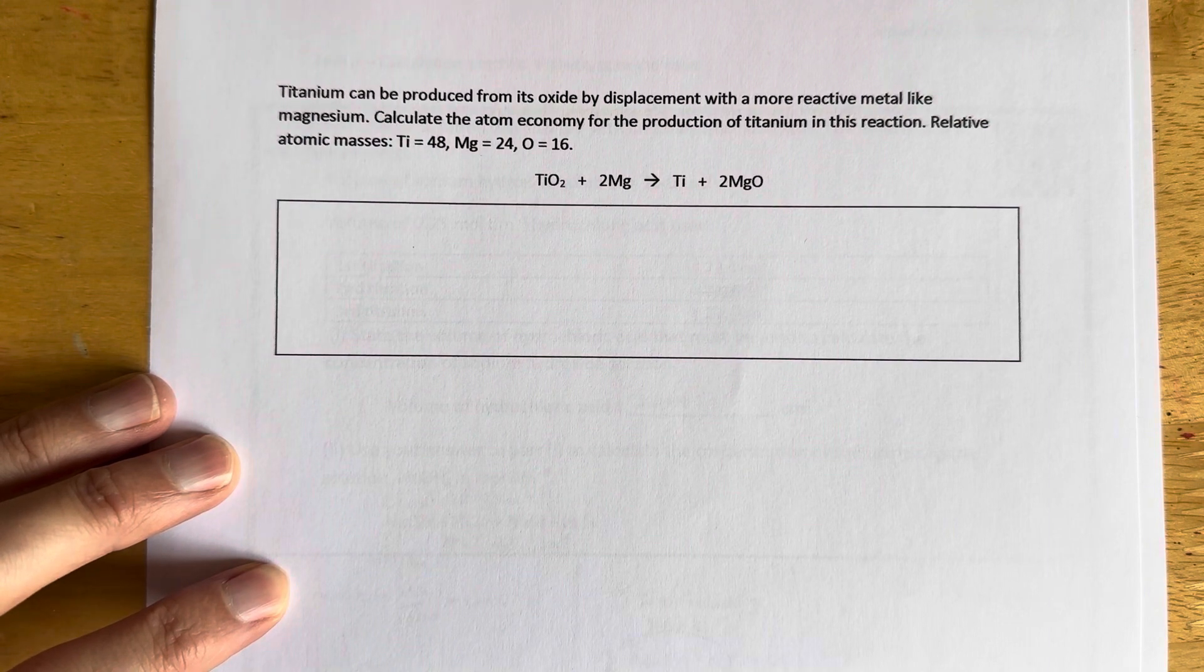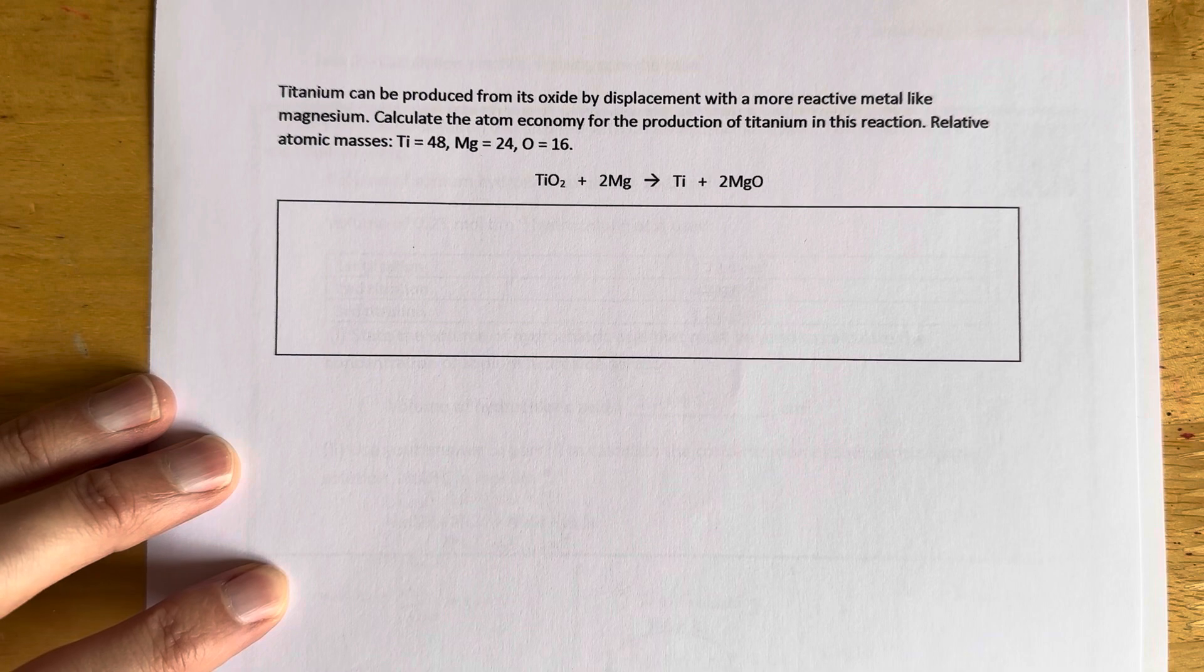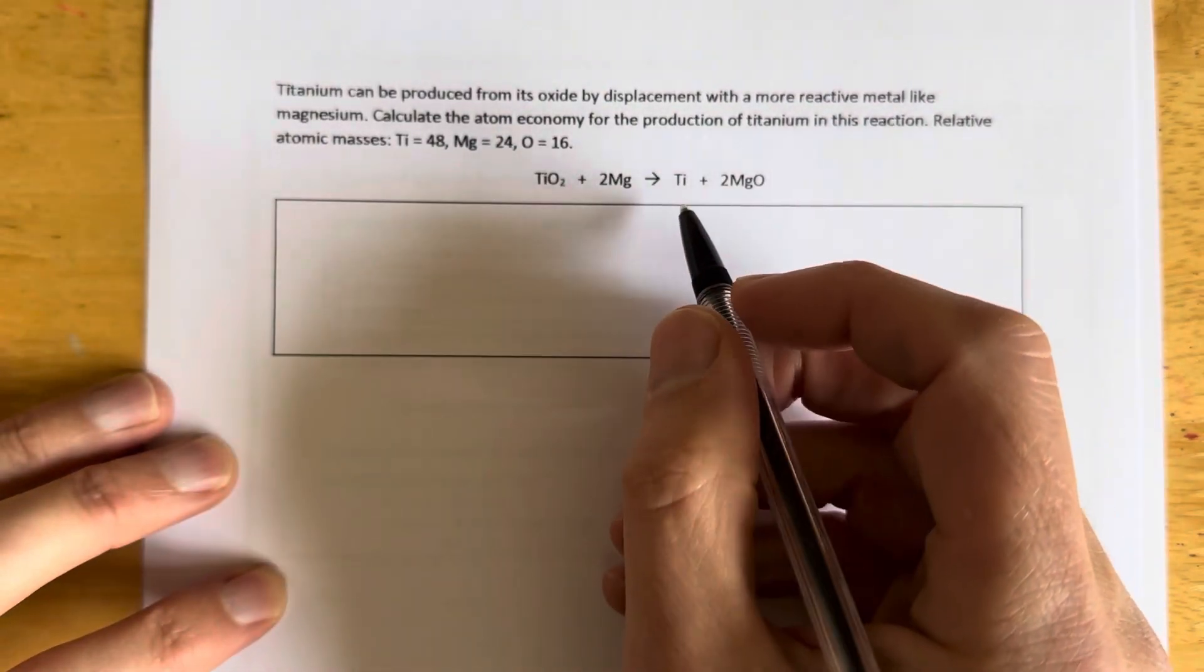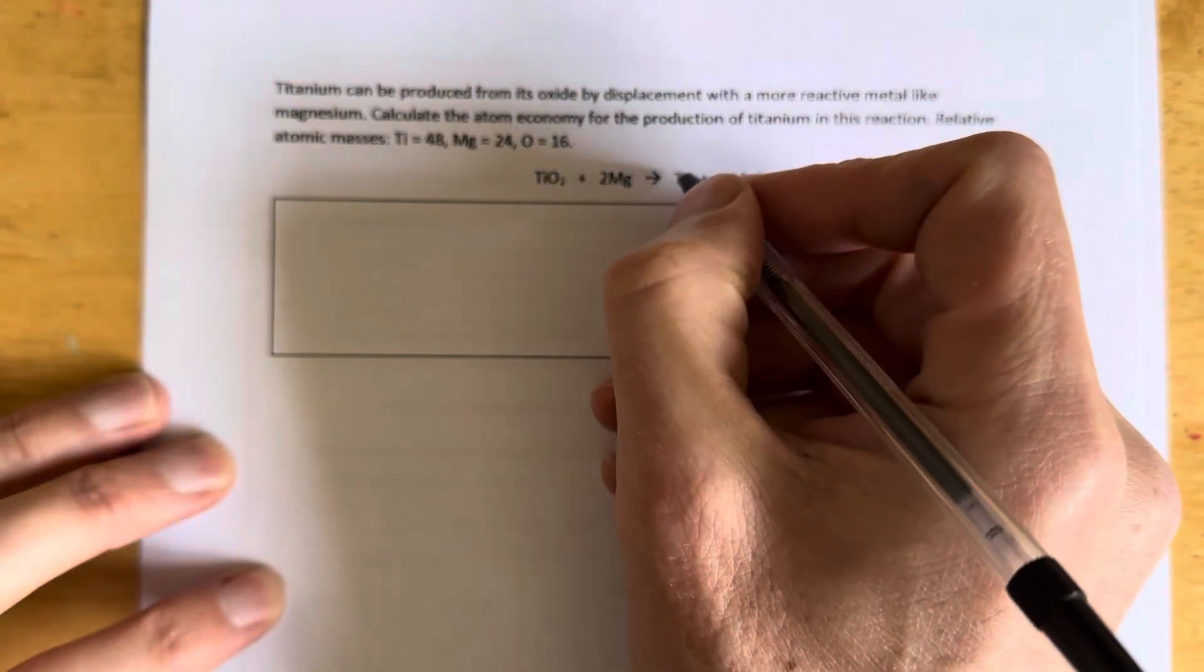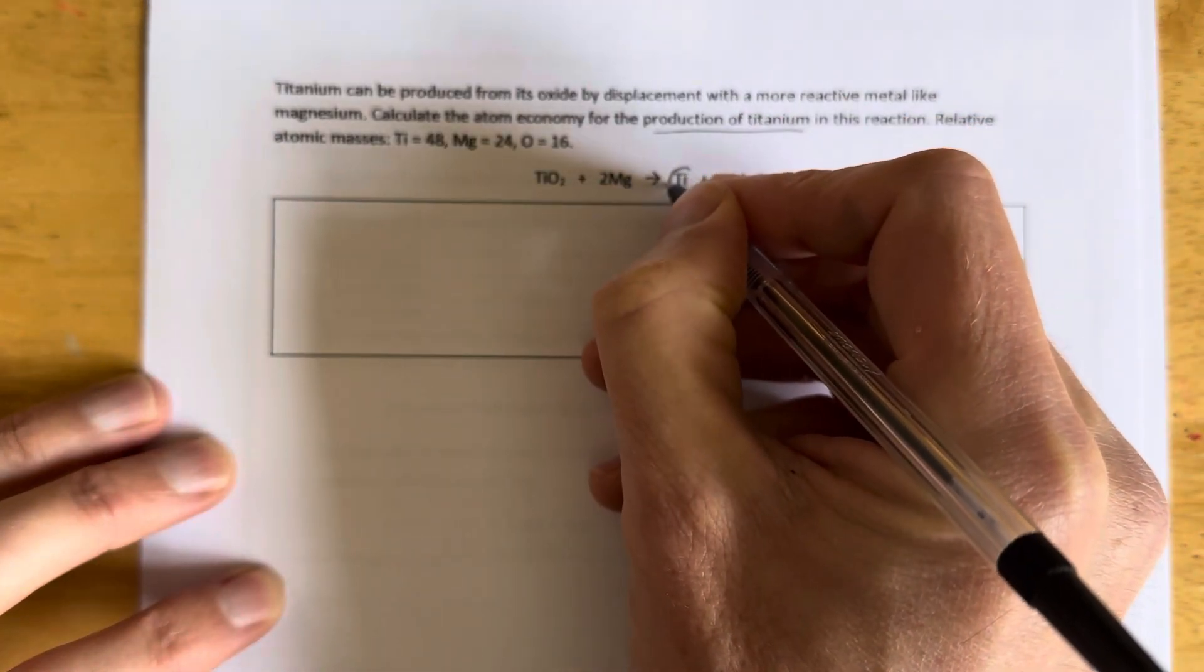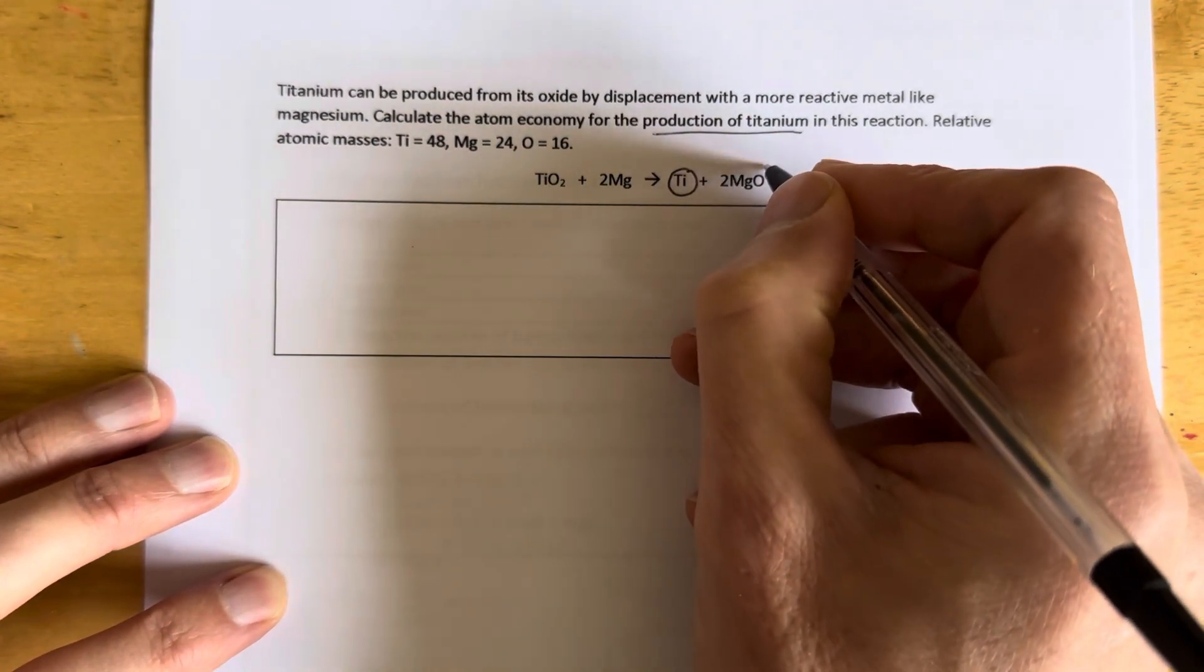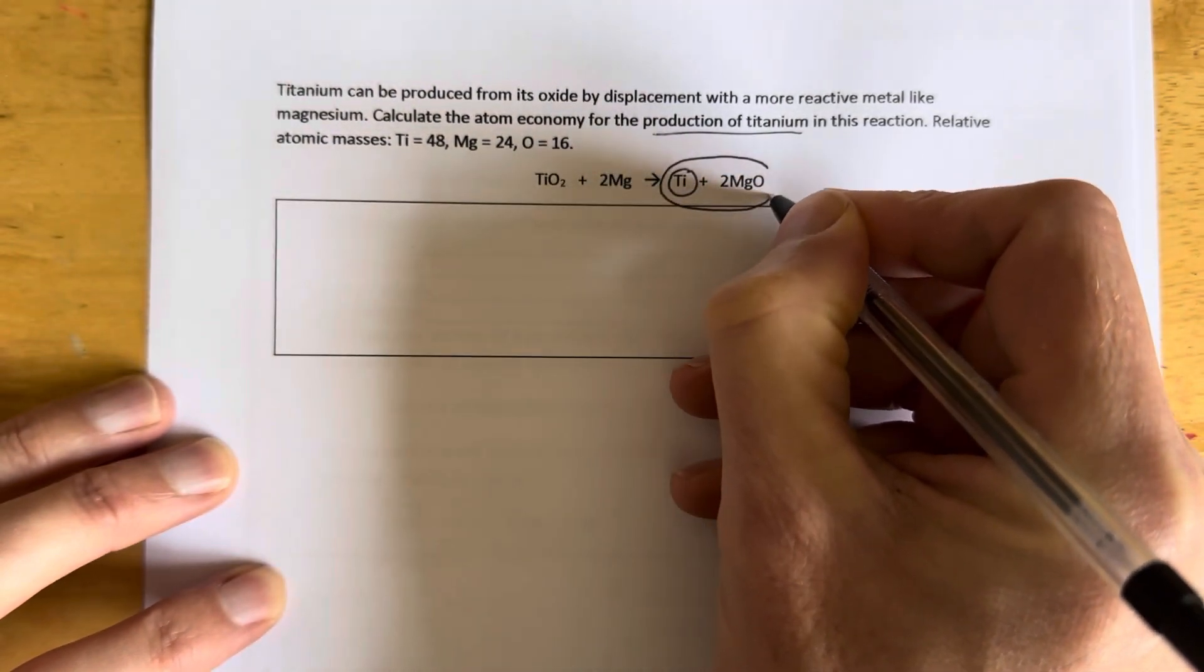There's different ways to do this but essentially atom economy is a percentage calculation. We want to know the percentage by mass in this reaction of the useful product over the total product. So I always tell students to circle the useful product. We want the production of titanium, so it's the atom economy for titanium. I want the titanium circled. I want the total product circled, so all the products. We're going to circle all of those over there as well.